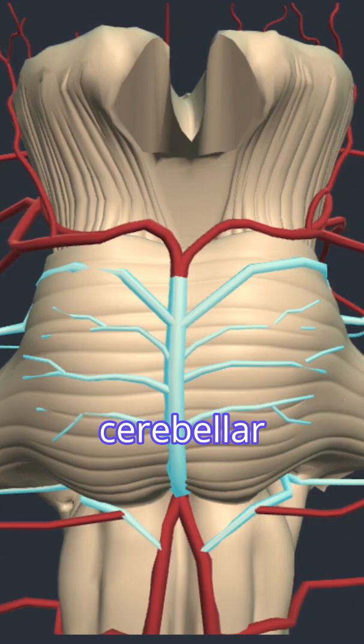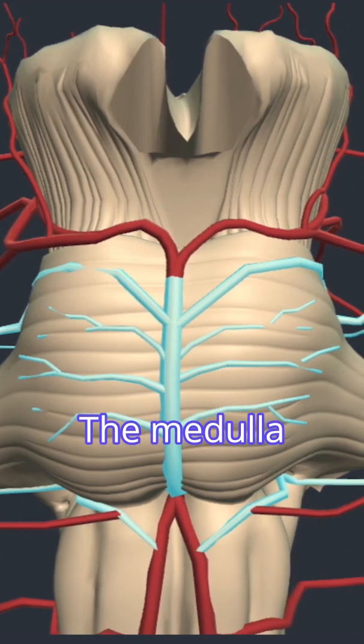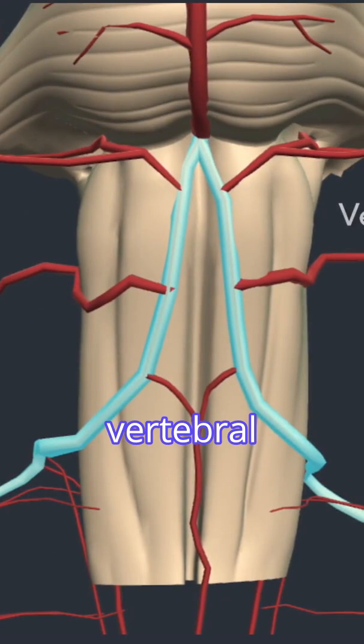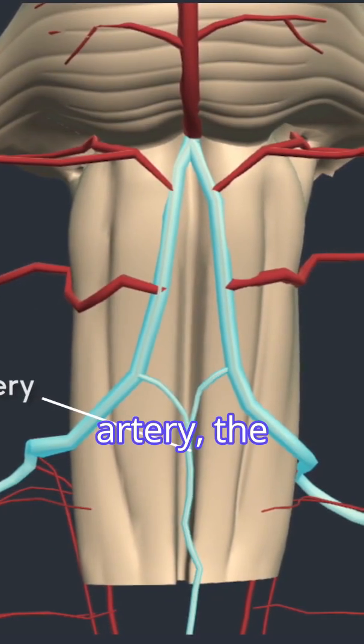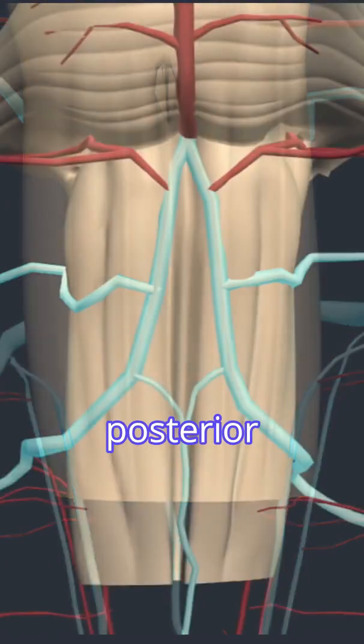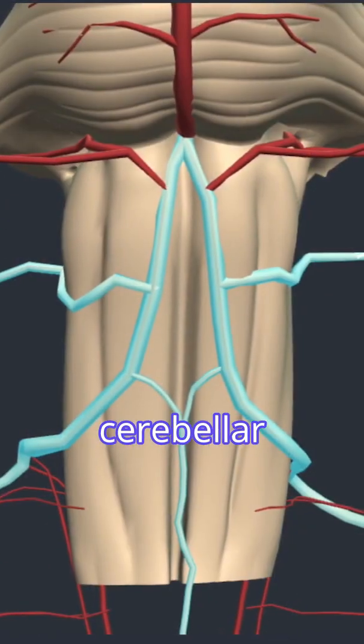The medulla oblongata is supplied by the vertebral arteries and their branches, the anterior spinal artery, the posterior spinal arteries, and the posterior inferior cerebellar arteries.